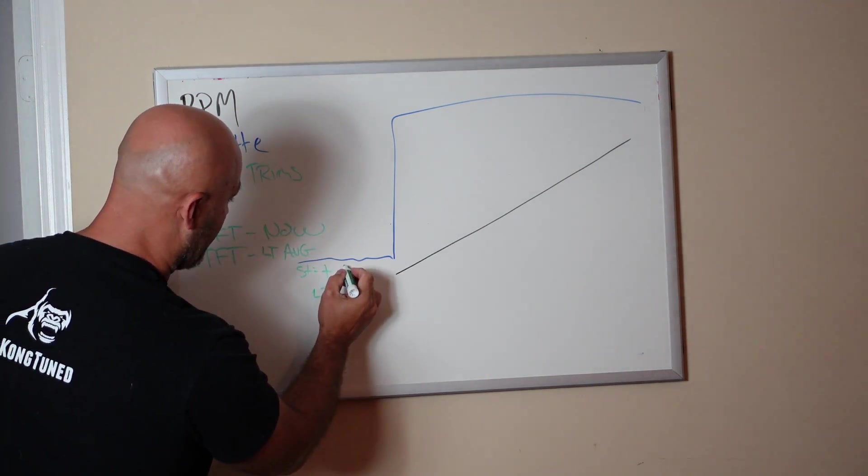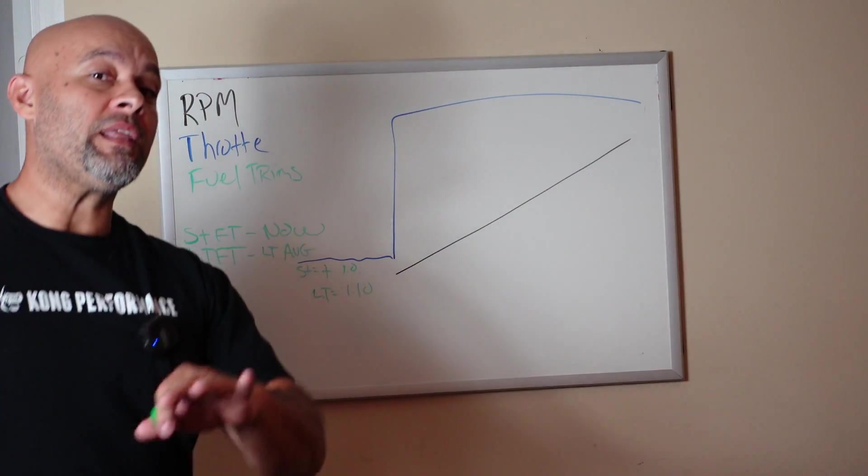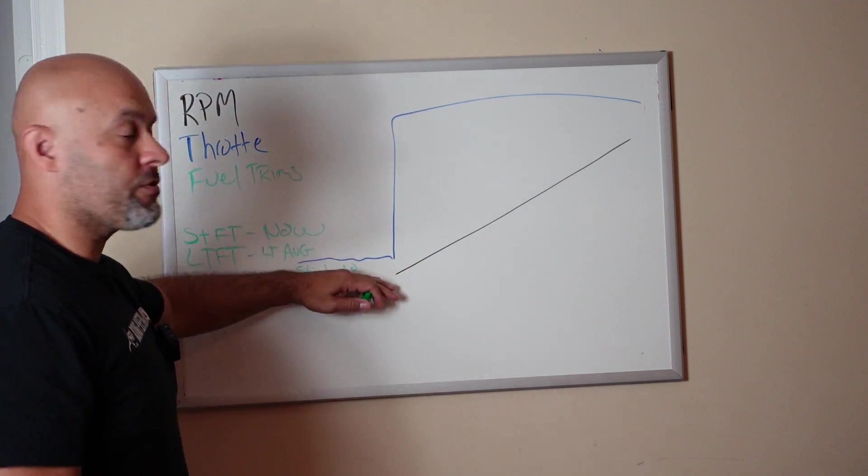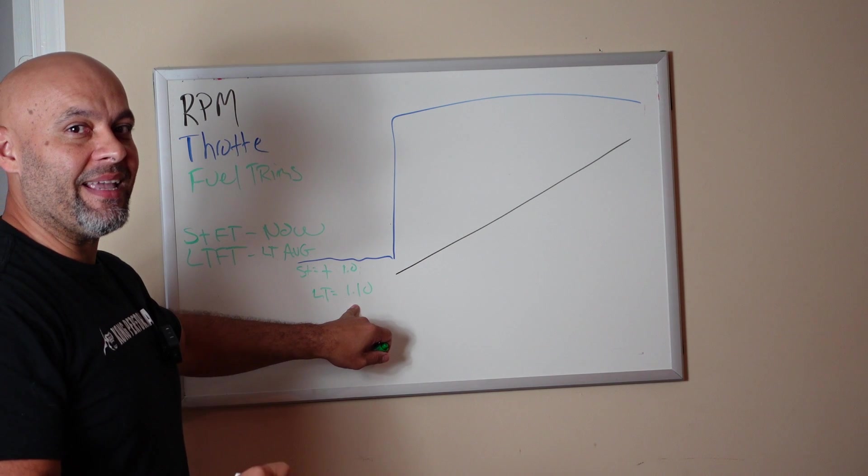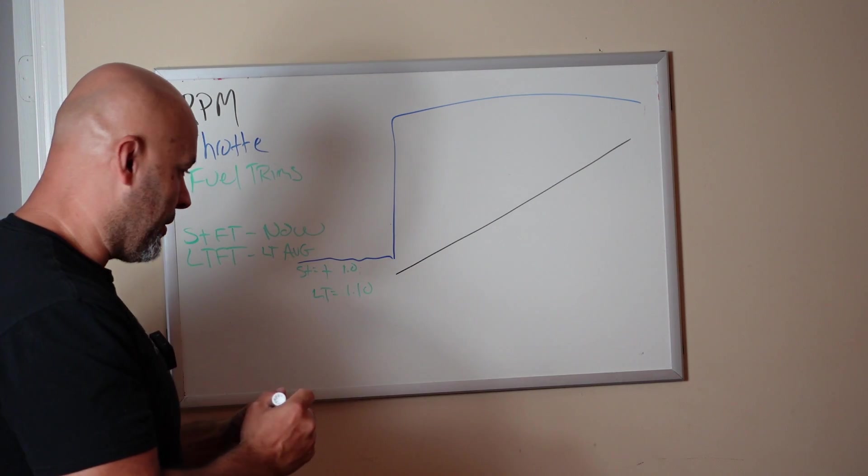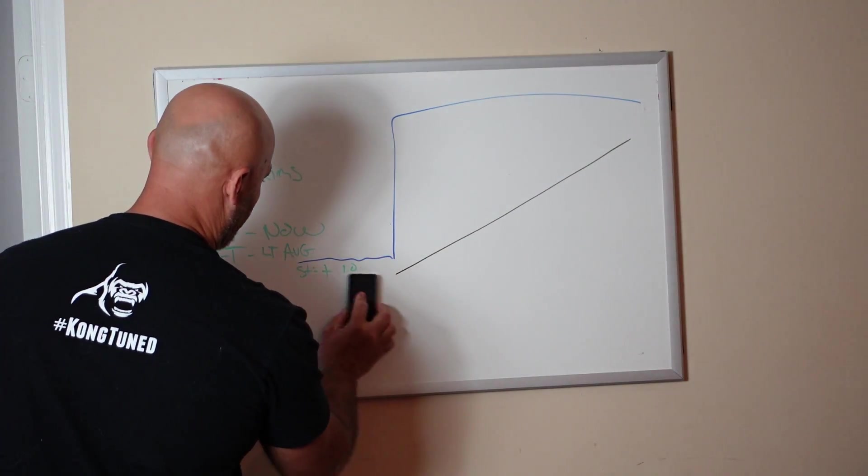After it has learned that, the short trims will look like regular 1.0. If you only monitor short-term fuel trims, you're going to think, oh, my short-term fuel trims are fine, they're 1.0. But it has baked in an automatic long-term correction of 10%. You got to monitor both.